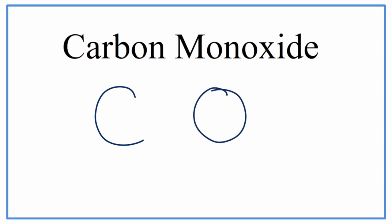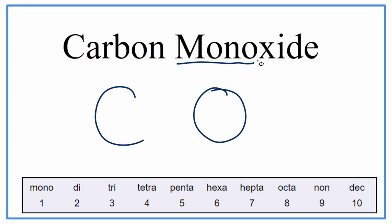Because they're both non-metals, we know that this is a molecular compound. We can also look at this prefix, mono, here, and see that it's a molecular compound because they use prefixes.